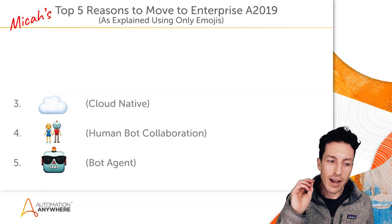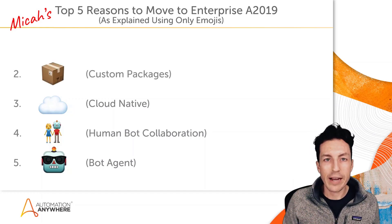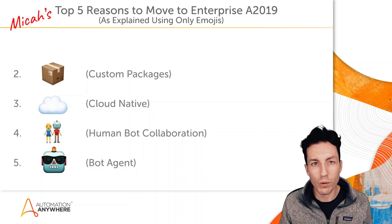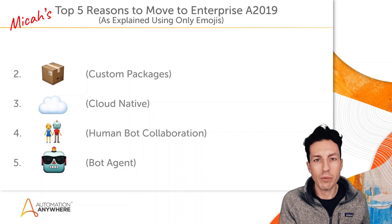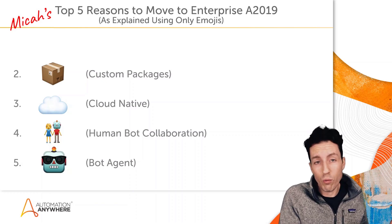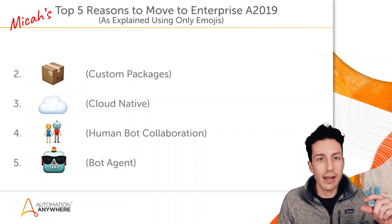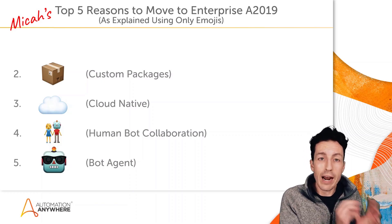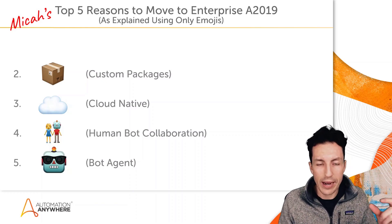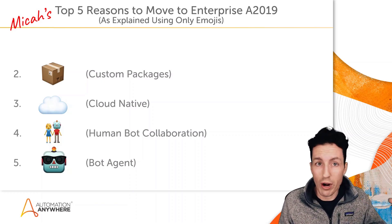Number two is custom packages. I absolutely love the ability to add custom packages into Enterprise A 2019. In version 11 and 10, we had commands in a toolbox for building bots — commands to interface with web applications, Excel, and so on. The same concept exists in A 2019 with packages and actions, but I have the ability using the package SDK to create my own packages that sit right next to the out-of-box packages in my bot building interface.